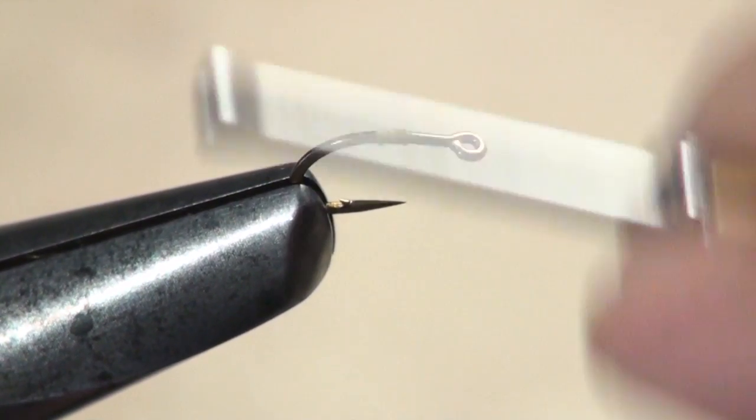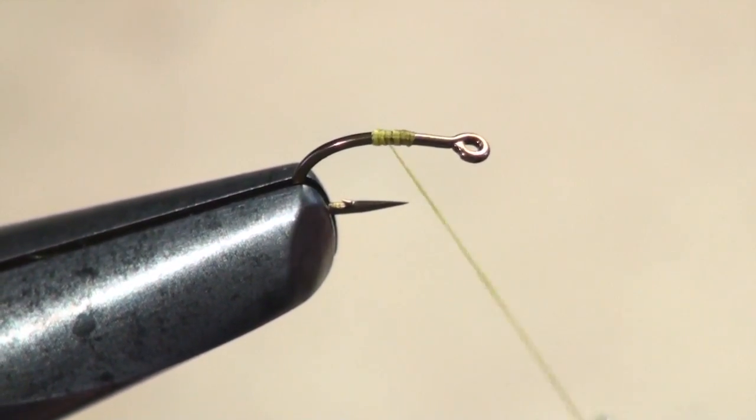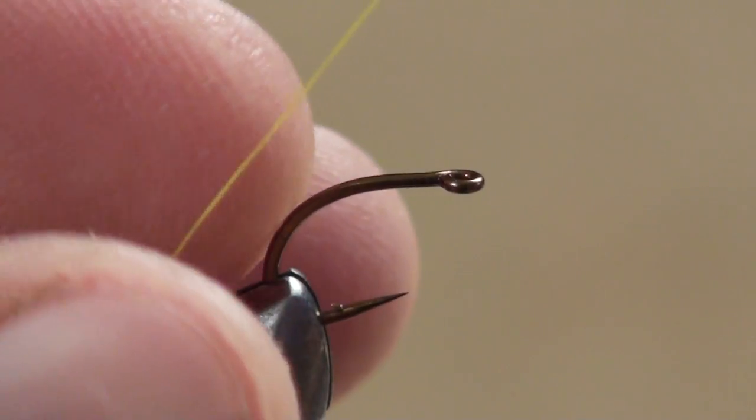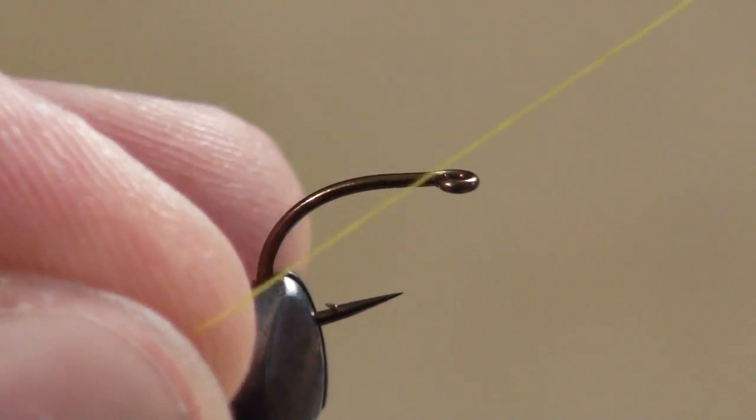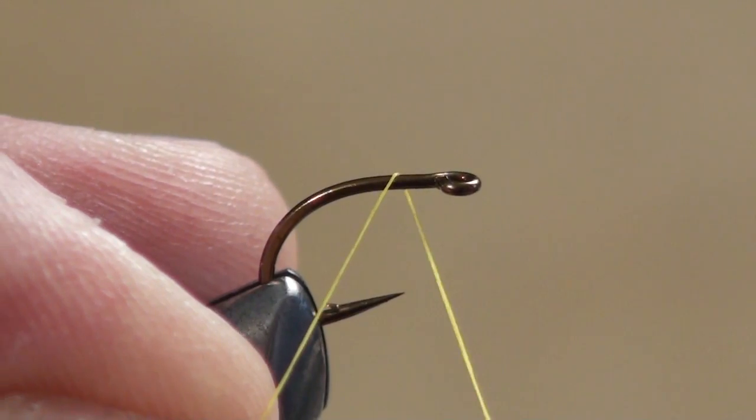Now here's another method I use when I'm tying larger flies and a little bit of tag will get covered up anyway. Take one complete turn of the thread around the hook shank.